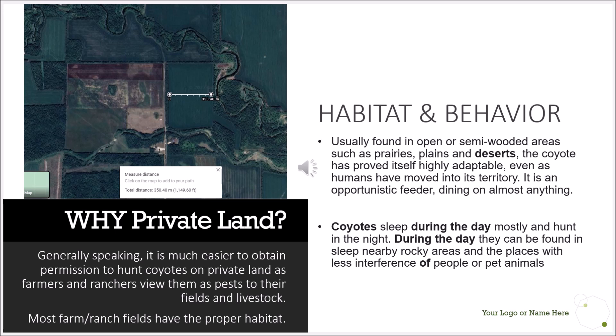Coyotes like to be in open fields but make their dens in thicker bush. If you can find a place with an open field, some thick bush, and maybe a creek, river, or marsh for a water source, that's prime coyote habitat. They'll have all types of prey animals — rabbits, small birds — and are opportunistic feeders. On private land with livestock, they'll be attracted to farmer's fields, which is why they tend to hang around farmland.